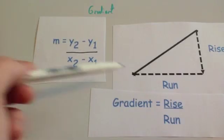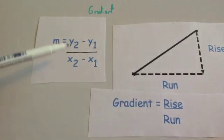Where x1, y1 is the first coordinate, and x2, y2 is the second coordinate.